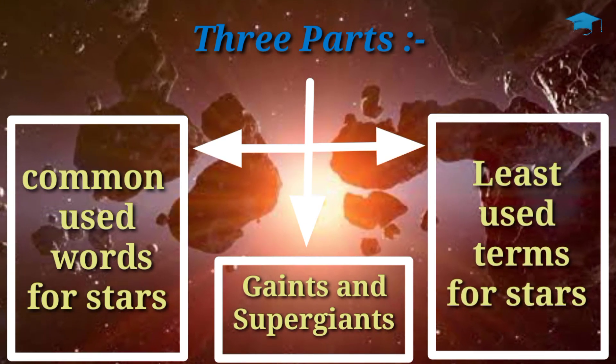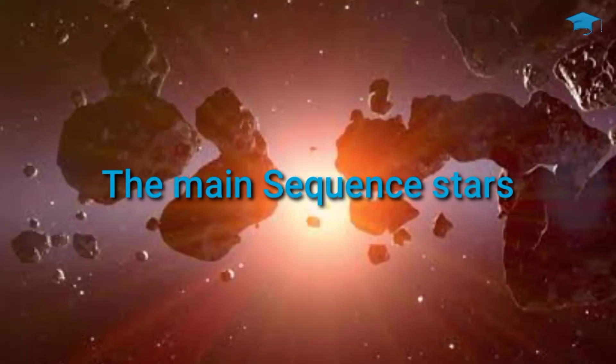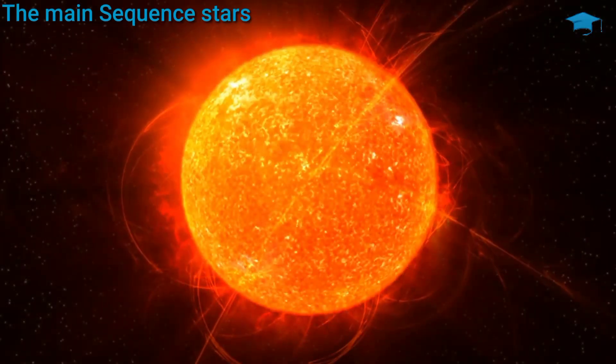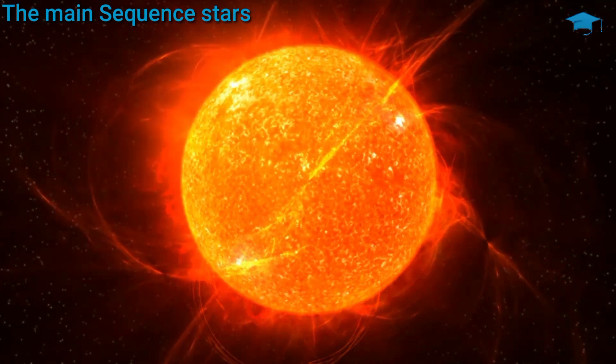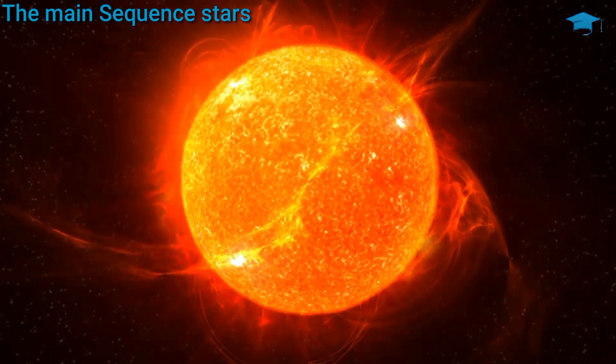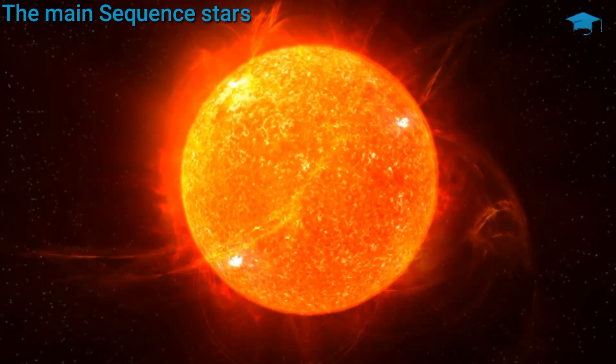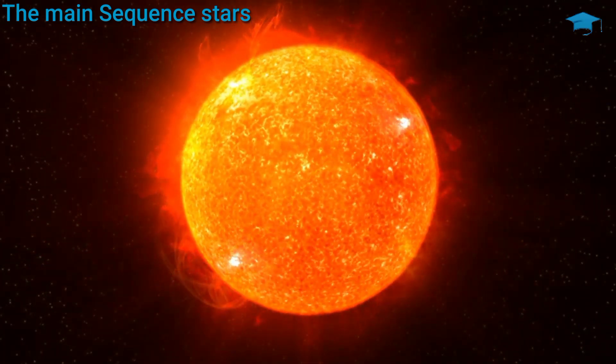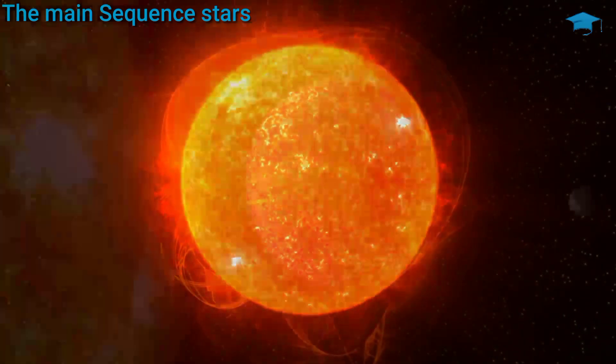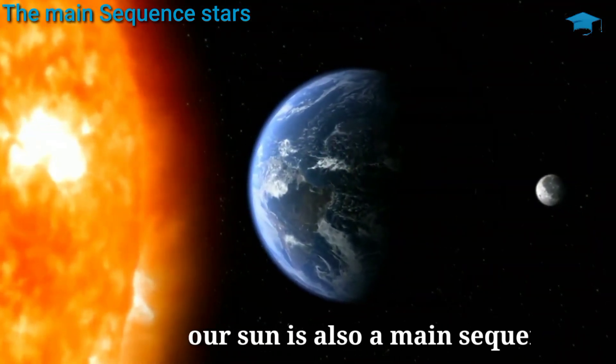In the first one, the commonly used word is the main sequence star. Main sequence stars are powered by the fusion of hydrogen into helium in their cores. About 90% of stars in the universe are main sequence stars. Our sun is also a main sequence star.